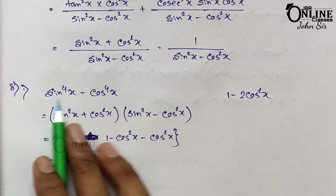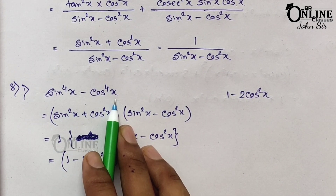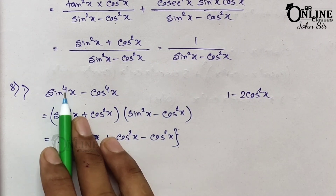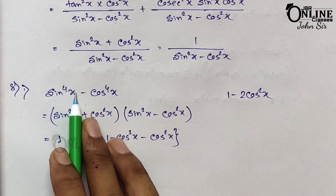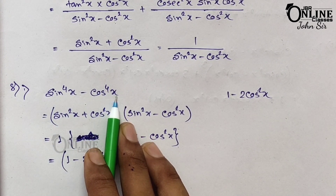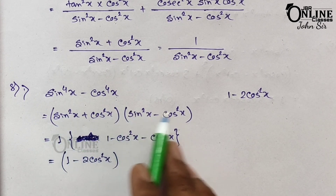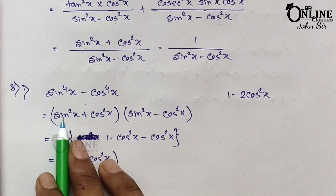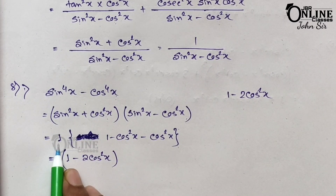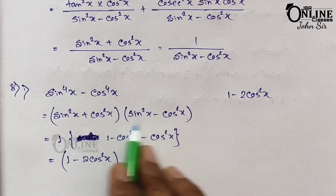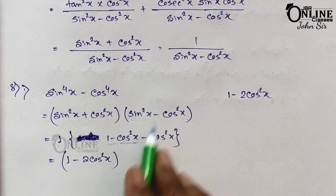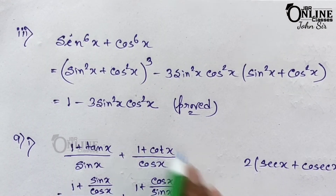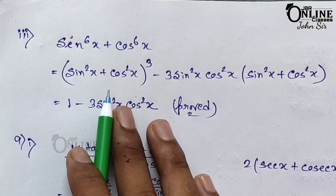Sum number 8.1: sin⁴x − cos⁴x — show it equals 1 − 2cos²x. Write as (sin²x)² − (cos²x)², applying a² − b² = (a+b)(a−b), giving (sin²x + cos²x)(sin²x − cos²x) = 1·(sin²x − cos²x). Since sin²x = 1 − cos²x, the answer becomes 1 − cos²x − cos²x = 1 − 2cos²x. Sum 8.2 follows the same method.